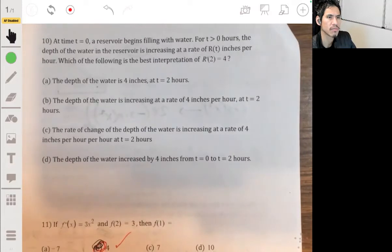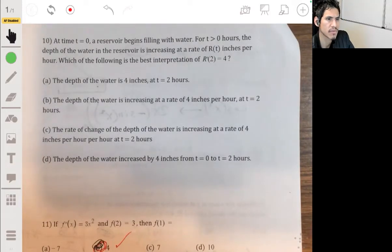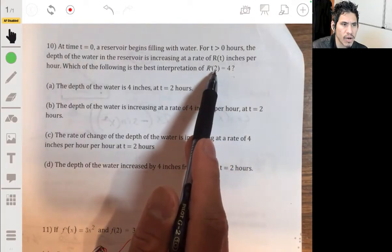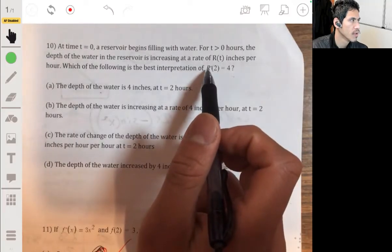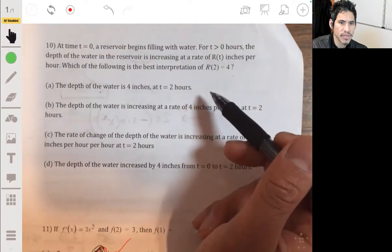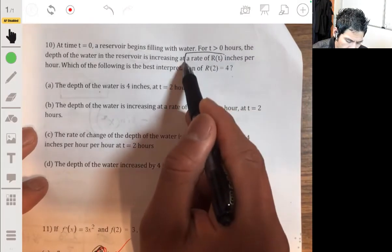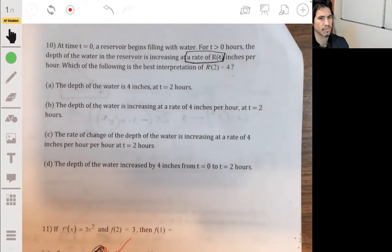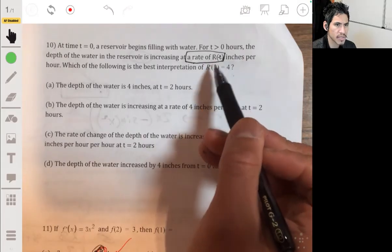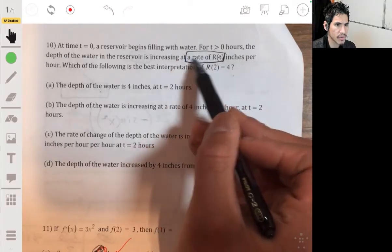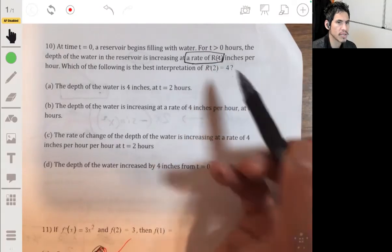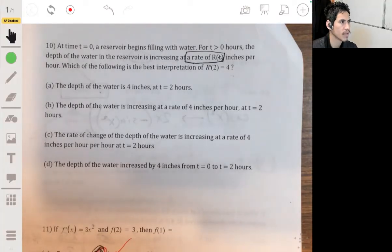Problem 10. At time t equals 0, a reservoir begins to fill with water. The depth of the water in the reservoir is increasing at a rate of r of t inches per hour. Which of the following is the best interpretation of r prime of 2 equals 4. Okay, so this is one of those ones where they want to test your derivative of derivative with per hour, time, feet per feet squared, that sort of thing. Because you're already given the rate. The rate is the function that we're used to thinking about as not being a rate. So if we have the derivative of r of t, you're basically finding the rate of the rate. So we're told the rate of the rate when t equals 2 is basically 4 inches per hour per hour, that sort of thing.